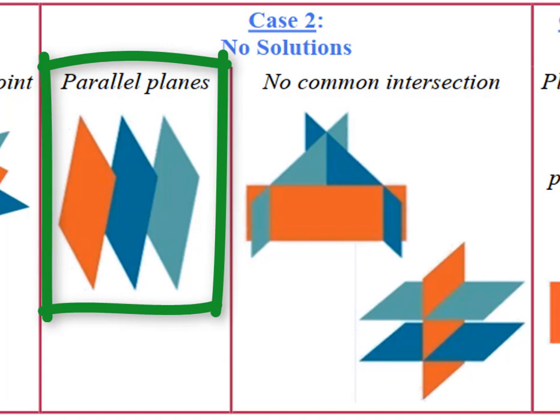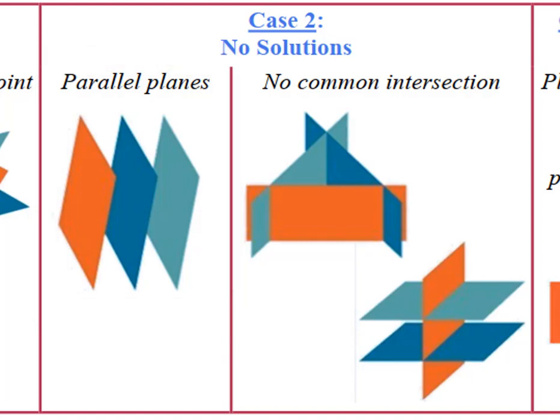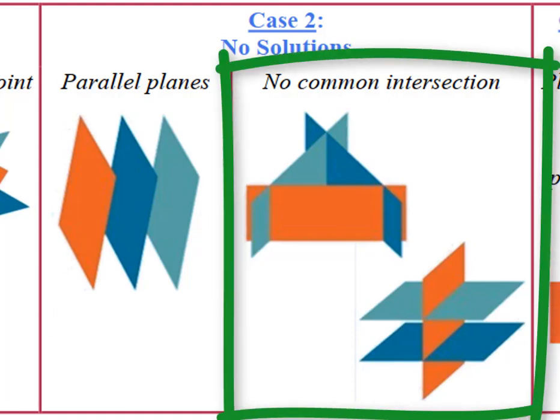The other possibility with no solutions is no common intersection point. So our planes intersect, but because there's three and they're planes they may not intersect at the same point. And you can see that by these two diagrams here.